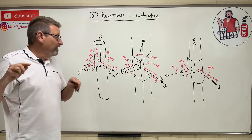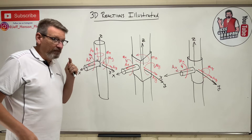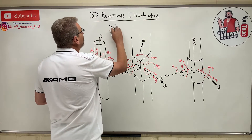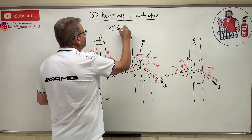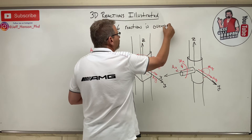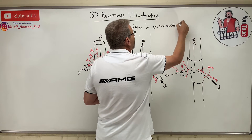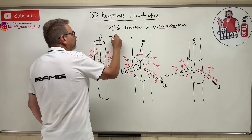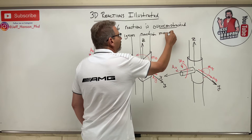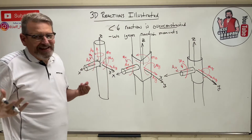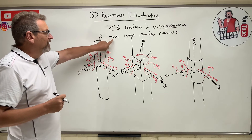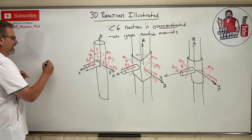Six reactions in 3D is all you need to ensure something will never move. If you have more than six reactions, the system is called over-constrained. On over-constrained problems, we ignore the reaction moments — they just never come into play because the thing can't move anyway. You're going to see over-constrained problems involving the next connection type.